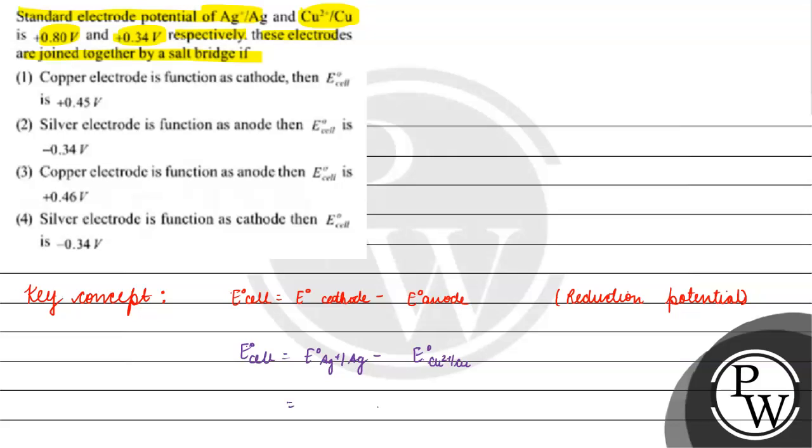E° of Ag⁺/Ag, how much is it given? It is given 0.80V. E° of Cu²⁺/Cu, how much is it given? 0.34V.